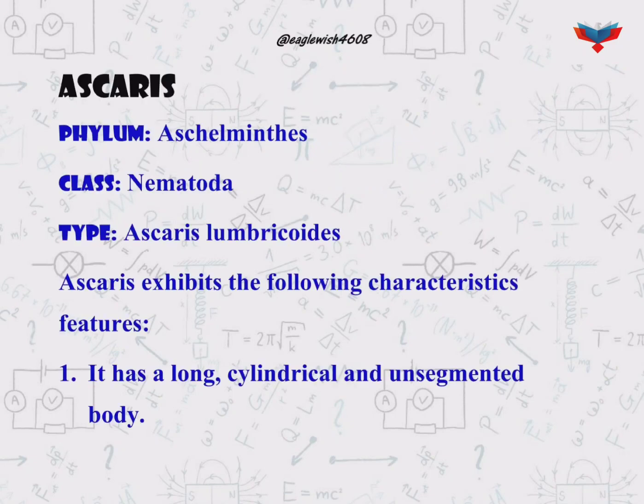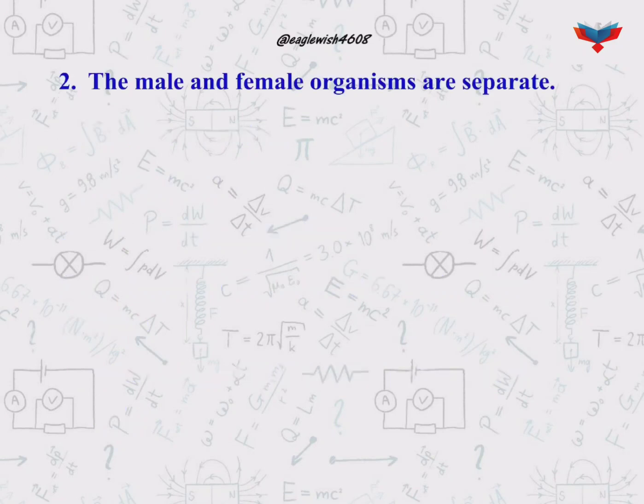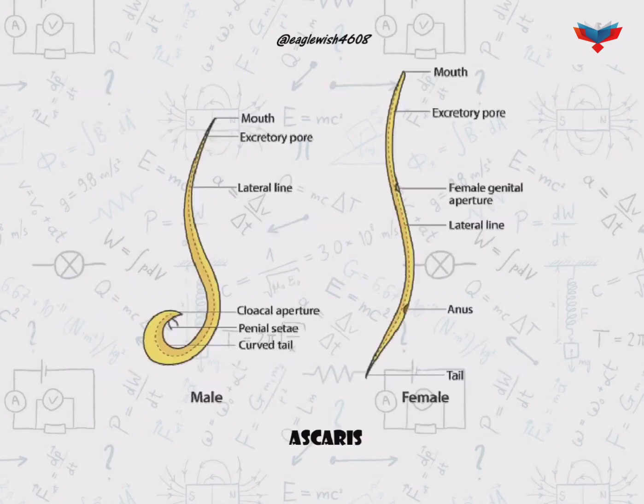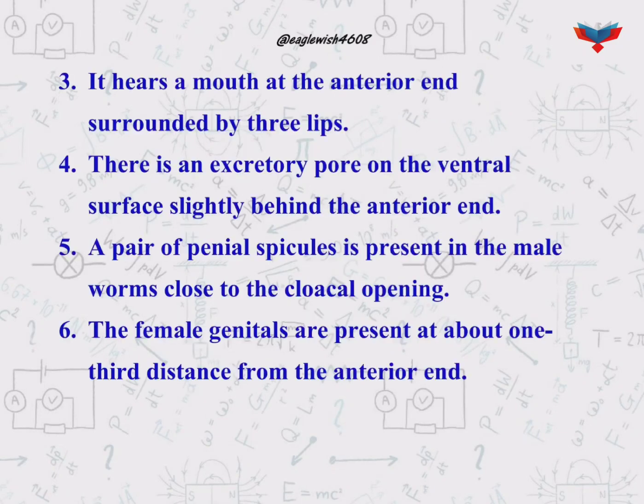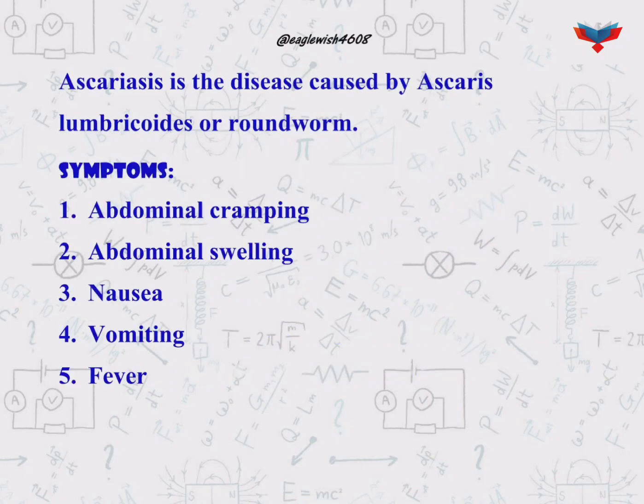Ascaris is a member of phylum Aschelminthes and class Nematoda, which causes ascariasis. The male and female Ascaris are separated — the diagram here shows the male and female Ascaris. The symptoms of ascariasis are vomiting, nausea, fever, abdominal cramping, and swelling.